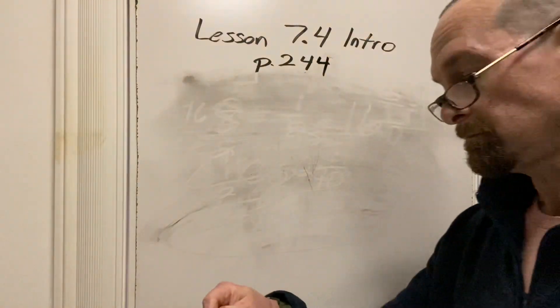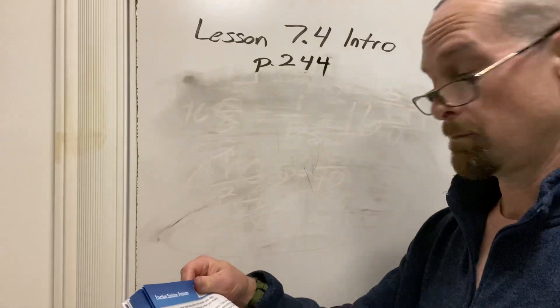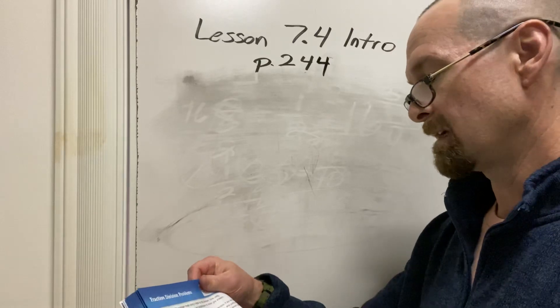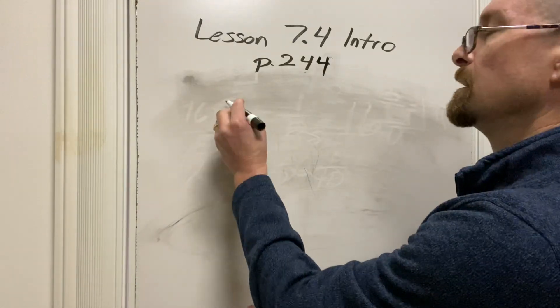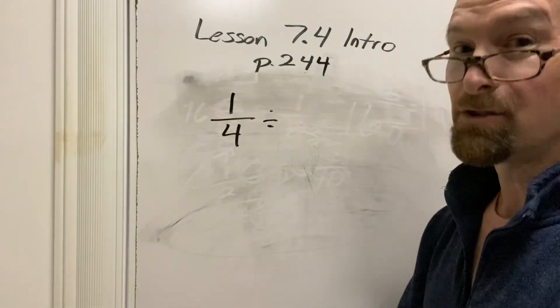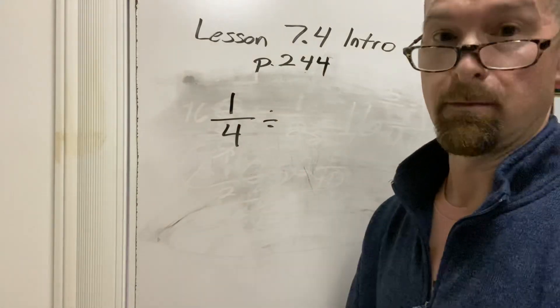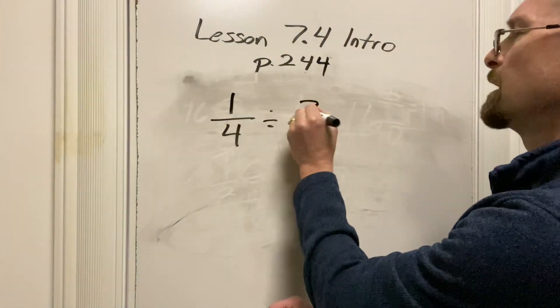Regina has a quarter of a watermelon. I wonder what she did with the other parts of it, but if she and two friends share it equally, ah, the fourth is getting divided up this time, what portion will each person get? So we've got a fourth of a watermelon, and we're dividing it by three people, because it's she and two friends.